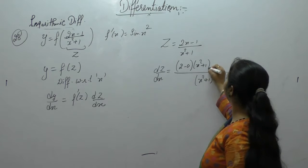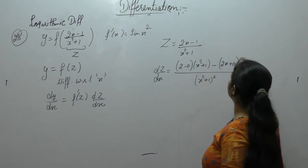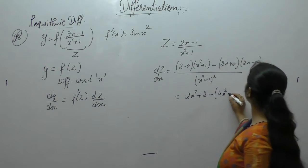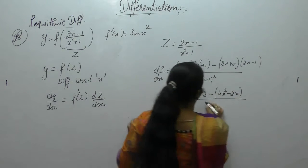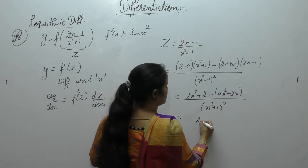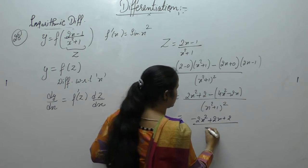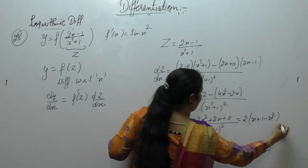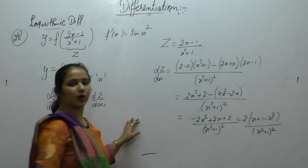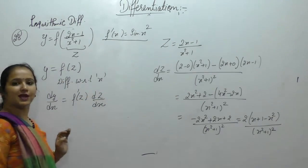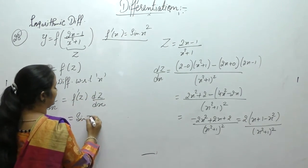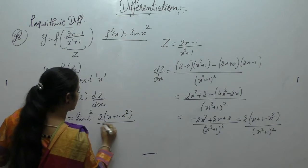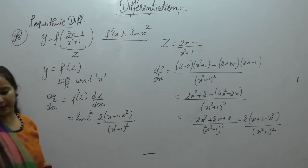z = (2x-1)/(x²+1). Differentiate using the quotient rule: [v·u' - u·v']/v². We get [(x²+1)·2 - (2x-1)·2x]/(x²+1)². This gives (2x²+2 - 4x²+2x)/(x²+1)², simplifying to 2(2x+1-x²)/(x²+1)².